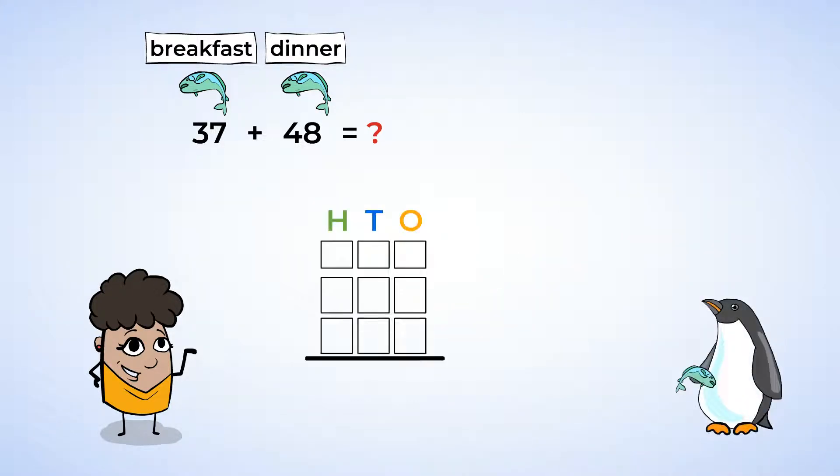Let's try this one using a place value chart. We can use the place value chart by lining it up like this. This way, we can see the different place value spots lined up. The 7 and the 8 are lined up because they are in the ones place. The 3 and 4 are lined up because they are in the tens place.